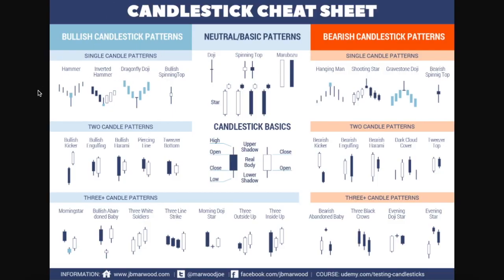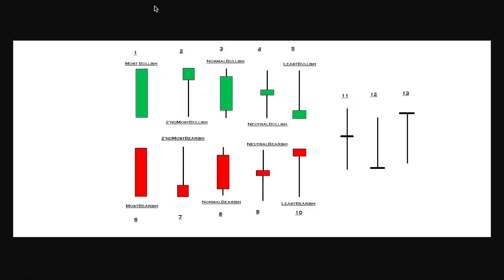Here's the regular cheat sheet — take a look at this and pause the video. For the second cheat sheet, this one ranks the most bullish candle to the least bullish candle, and the most bearish candle to the least bearish candle. We also have three candlesticks that depend on the context of the trend — these can be either bullish or bearish.